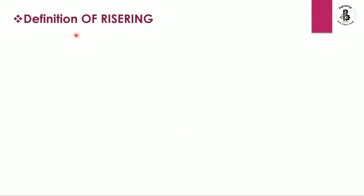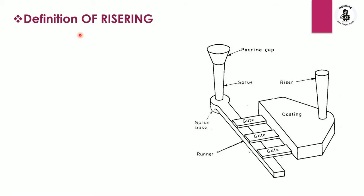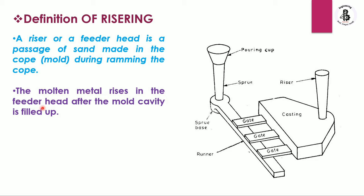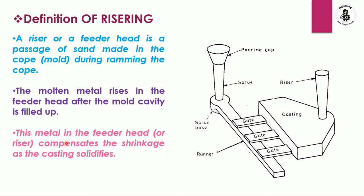Now we will look at the definition of risering. A riser or feeder head is a passage made in sand in the cope side during the ramming of the cope. It is located in the cope side of a sand casting process. The molten metal rises into the feeder head after the mold cavity is filled up. All the molten metal travels through components like pouring cup, sprue, runner, gates, and mold cavity, and once the cavity is filled, the riser is also filled with molten metal.